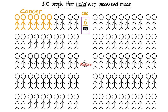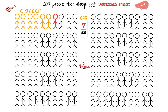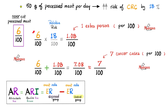Out of each 100 people that never eat processed meat, 6 out of 100 got colorectal cancer. But out of 100 people that regularly eat processed meat, 7 developed colorectal cancer. Note that if you multiply the 6 out of 100 by 18%, you get 1 in 100 — and this is the one extra person who developed colorectal cancer attributable to processed meat. Add this one extra person per 100 to the 6 per 100, and you get 7 per 100.